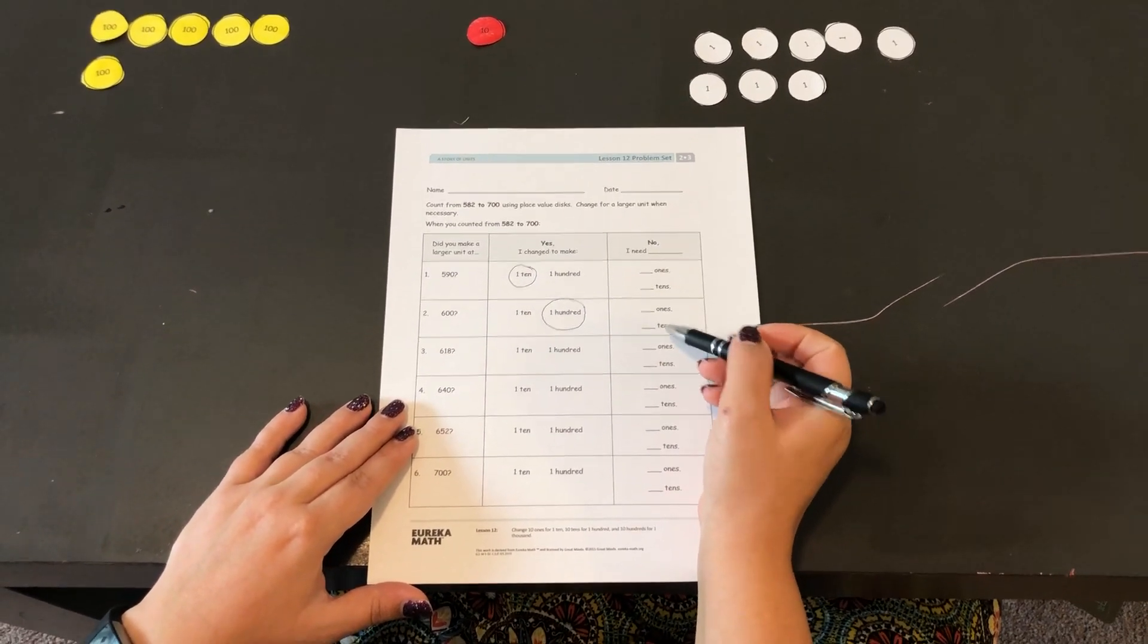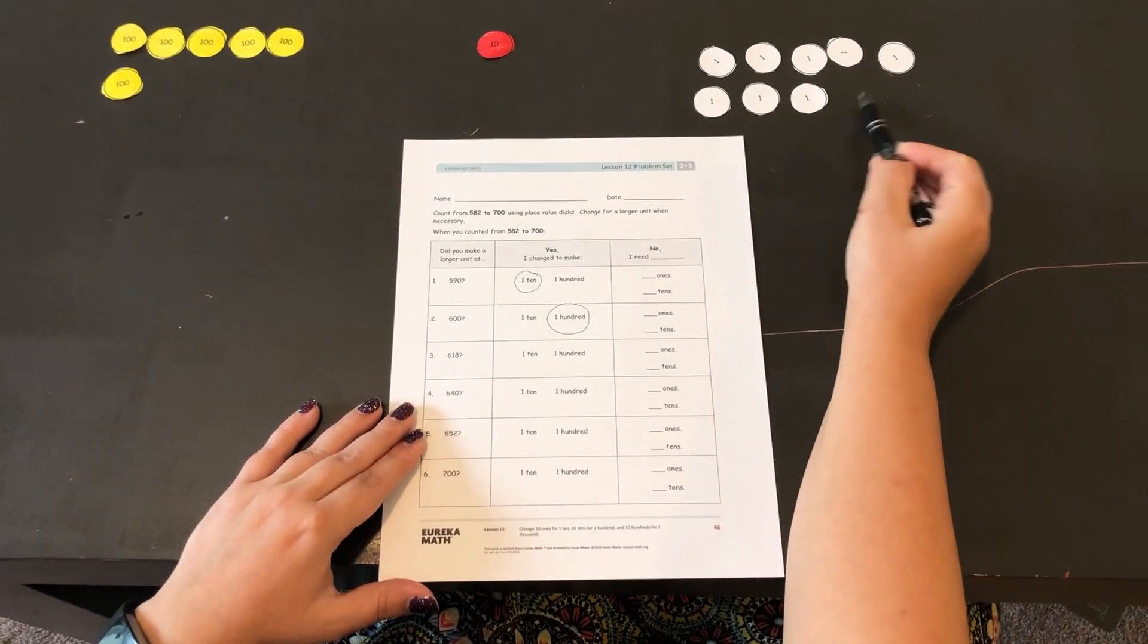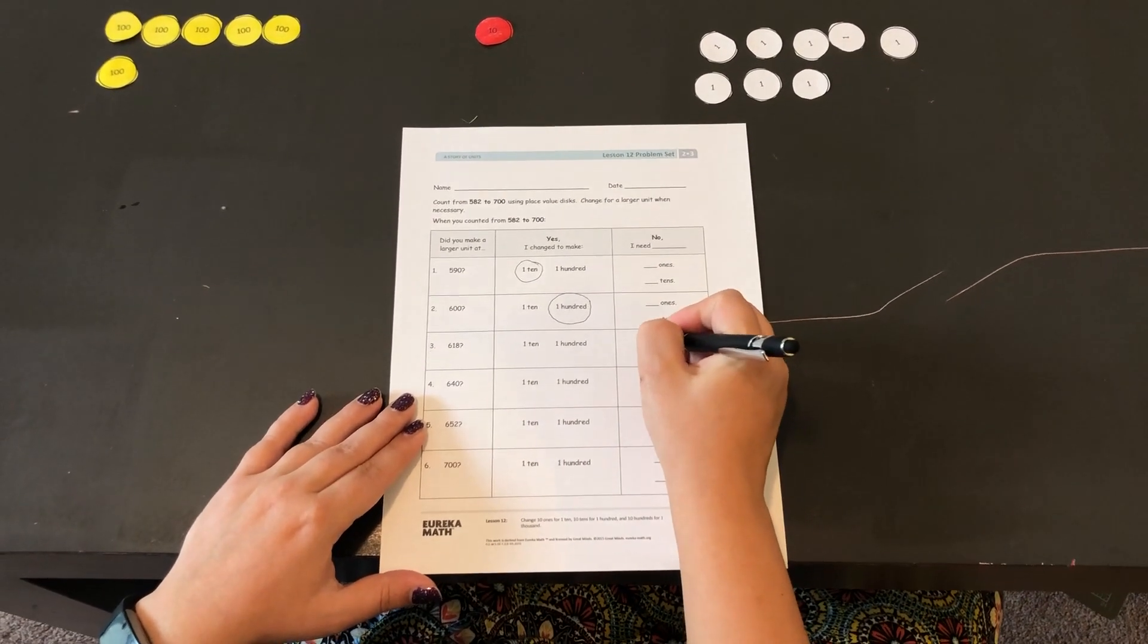So if I wanted to make a larger unit, I could add two ones and that would make a ten.